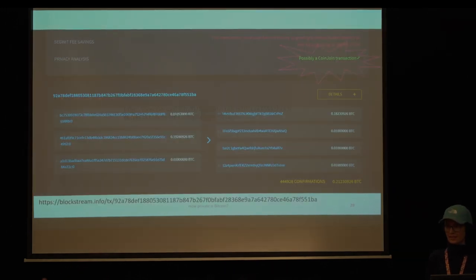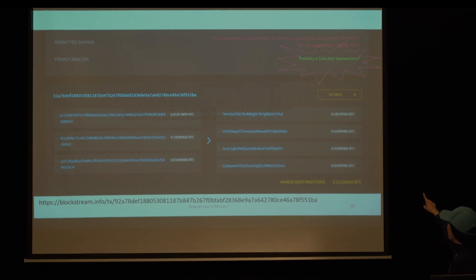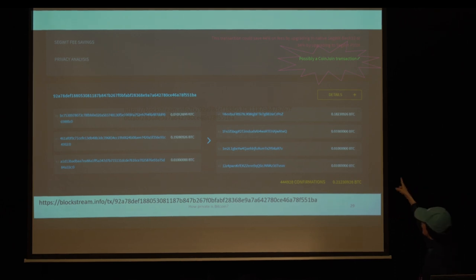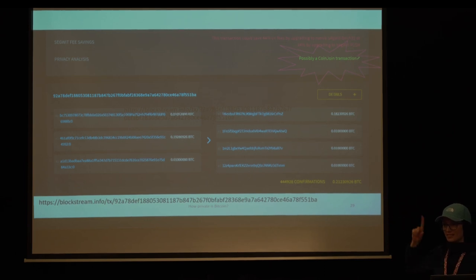Question: How is it possible to see that a transaction has come from CoinJoin? Answer: CoinJoin transactions all have equal-sized outputs, and whenever a transaction has equal-sized outputs, monitoring tools flag it as a CoinJoin transaction.